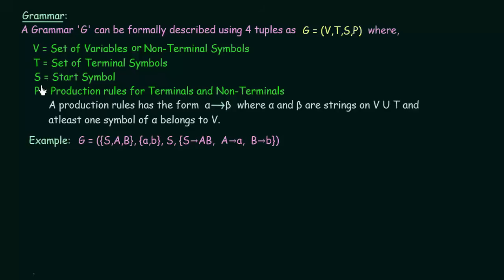V, T, and S are easy to understand, but let us try to understand what P is. P is a production rule. A production rule has the form alpha → beta, where alpha and beta are strings on V union T — meaning they can belong to the set of non-terminal and terminal symbols — and at least one symbol of alpha belongs to V, the set of non-terminal symbols.